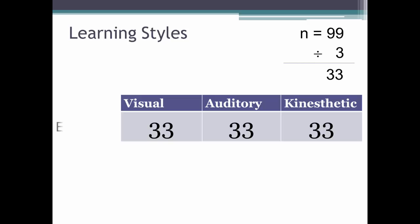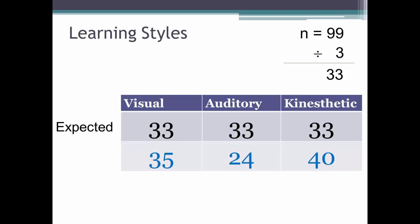So that's what we would expect to find if the data were normally distributed. But at what point can we say that learning styles is not normally distributed? Say your results are, instead of being normally distributed at 33 for each category, your survey results are 35 for visual, 24 for auditory, and 40 for kinesthetic. That's what we observe from the data we gathered. But is that enough of a difference to say that there really is a dominant learning style? Could what we observed be the result of chance or sampling error?